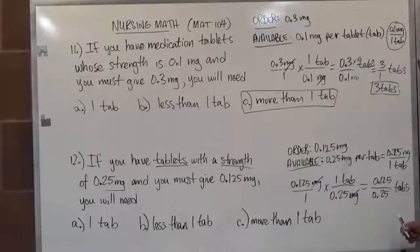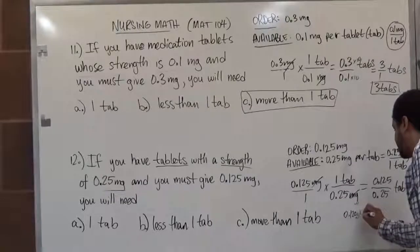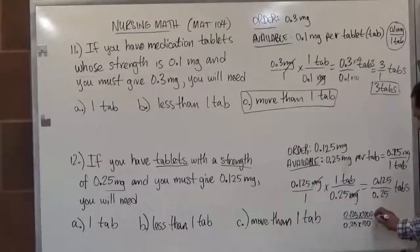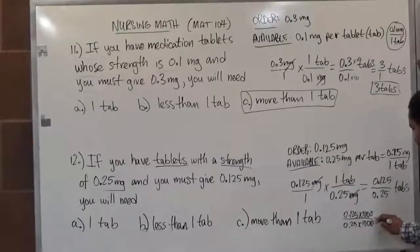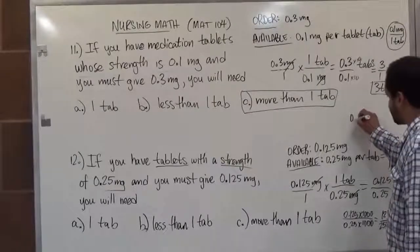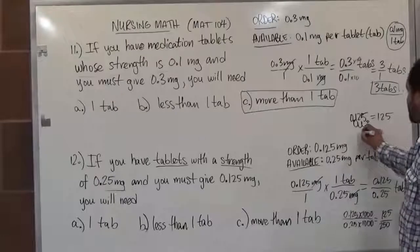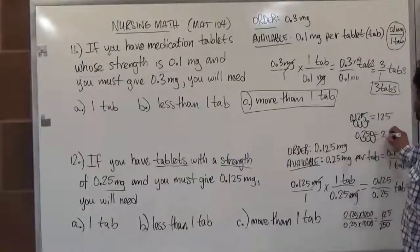We can never have a decimal in the denominator, so we multiply the top and bottom by a number to eliminate all decimals. In this case we multiply by 1000 so both numbers lose their decimals. 0.125 times 1000: moving the decimal three places gives us 125. 0.25 times 1000: moving the decimal three places — adding a zero for the third movement — gives us 250. So we have 125 over 250, in tabs.